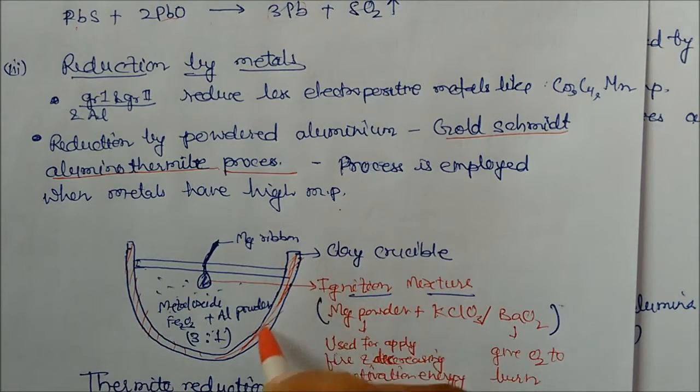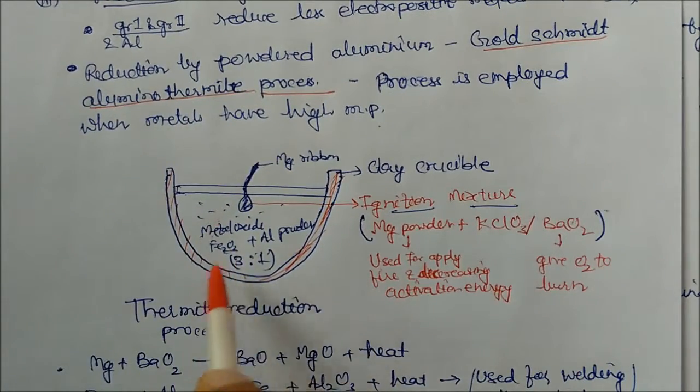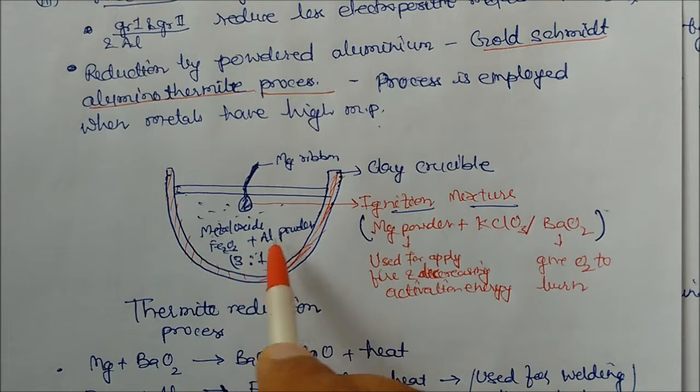So this is your clay crucible. I have drawn this diagram. Clay crucible, which contains metal oxide.